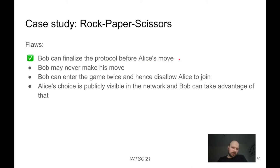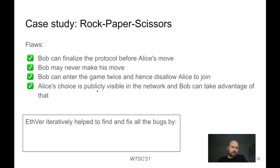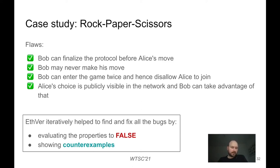Having identified the bug, we fixed the contract and reran the verification. After rerunning, the properties still evaluated to false and PRISM provided another counterexample. Iteratively, we were able to find and fix all the flaws in the protocol — Edver helped us find and fix all bugs by evaluating properties to false and showing counterexamples.